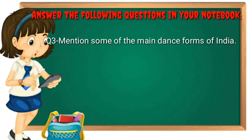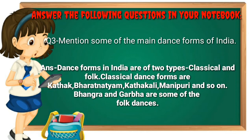Question number three: mention some of the main dance forms of India. Answer is: dance forms in India are of two types — classical and folk. Classical dance forms are Kathak, Bharatanatyam, Kathakali, Manipuri, and so on.